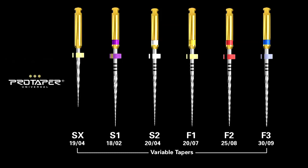Now that we have a glide path, let's discuss the files we'll use for shaping this canal. I'm going to show you the ProTaper system. ProTaper came to market in 2001 and is the most utilized system in the world. There are three shaping files and three finishing files — and note there's actually an F4 and an F5, but today we're showing what is most generally utilized. Notice specifically: variable tapers. This is the first system in the world to introduce progressive tapers over the active portion of a single file.